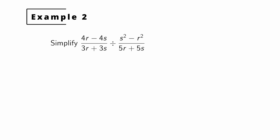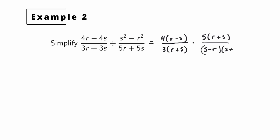Example 2. This one will require some factoring. We can rewrite this as a multiplication problem and do our factoring at the same time. The first fraction remains the same: we factor out the 4 from each term in the numerator to get 4 times (r minus s), and factor out a common factor of 3 in the denominator to get 3 times (r plus s). Now we rewrite the reciprocal of the second fraction — what was the denominator becomes the numerator. We factor out the 5 to get 5 times (r plus s). For the denominator, we have the difference of squares s squared minus r squared, which factors into (s minus r) times (s plus r).